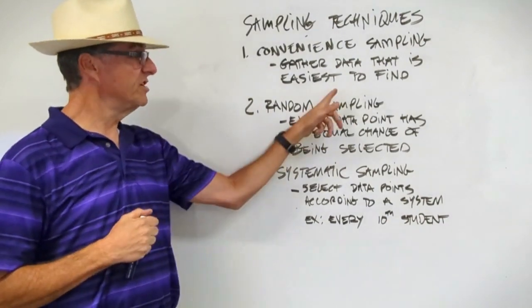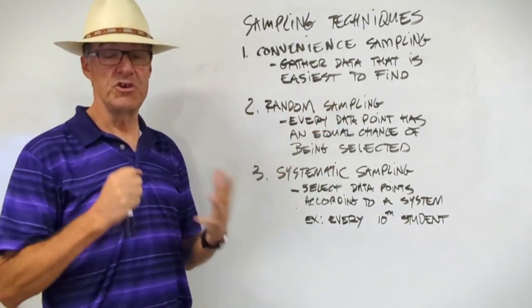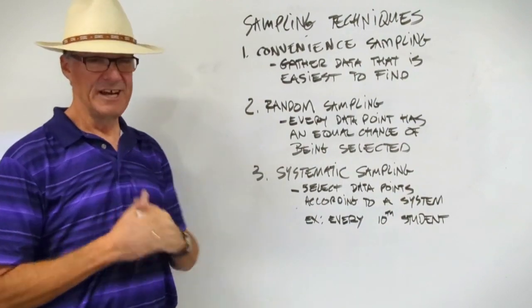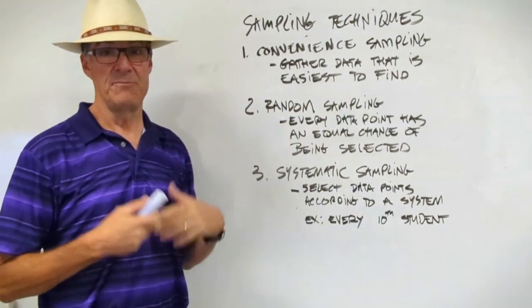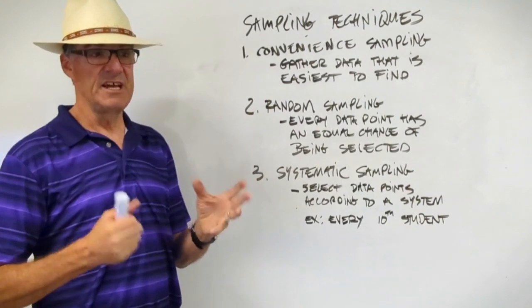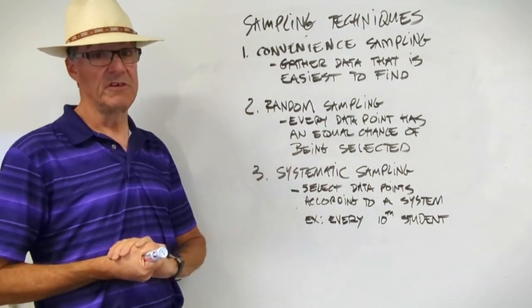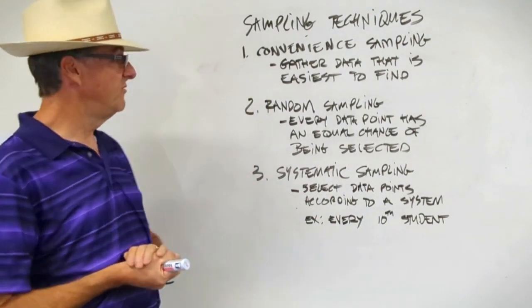So my data is going to be skewed towards that smaller group of people and not everybody in Phoenix. So convenience sampling is actually not a super good way to do it. In fact, I think you would only use this technique if you could not use any other techniques. And then when you make your conclusion, you'd have to recognize that because of your sampling method, your data is probably less conclusive than you'd like.